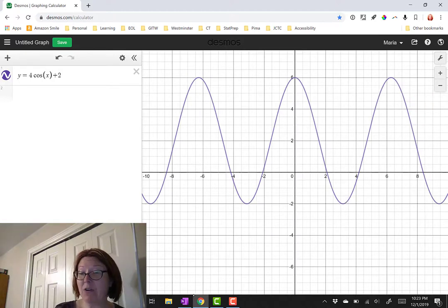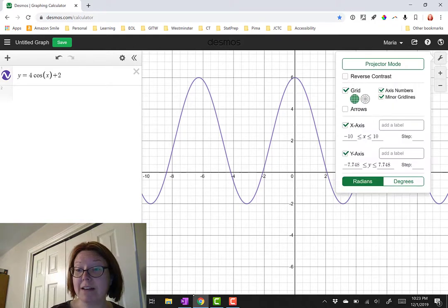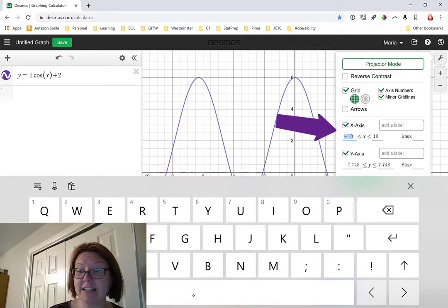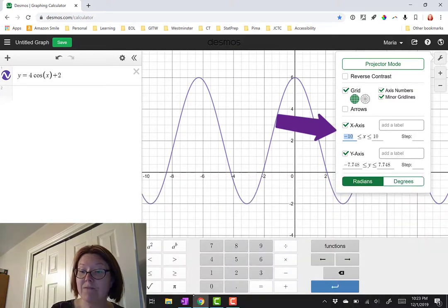Now I said before that we can change the step size on the x-axis to count by pi. So if I go back into the wrench menu and go to the x-axis, I can change that x-axis to be from a minimum to a maximum that includes pi.